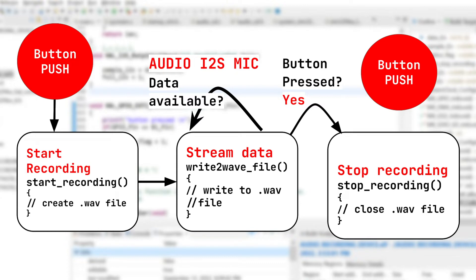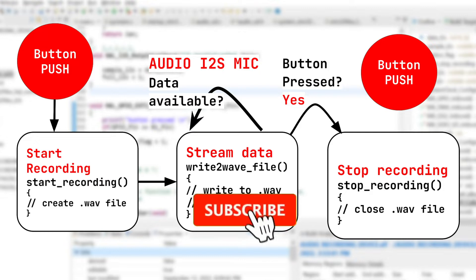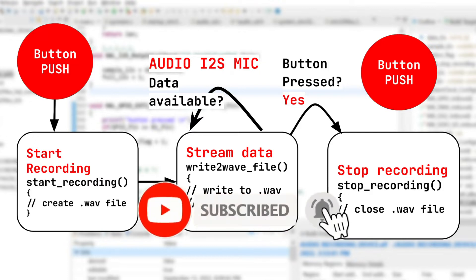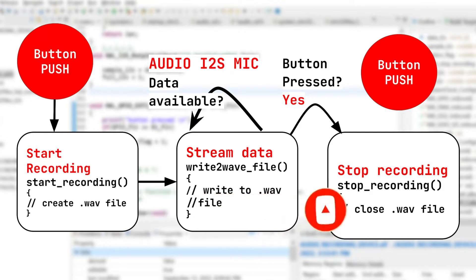The user presses the button and we start recording. Then, whenever audio data is available, we will stream data to the SD card, specifically to the file we created. When the user presses the button again, we stop recording. So let's jump into coding.